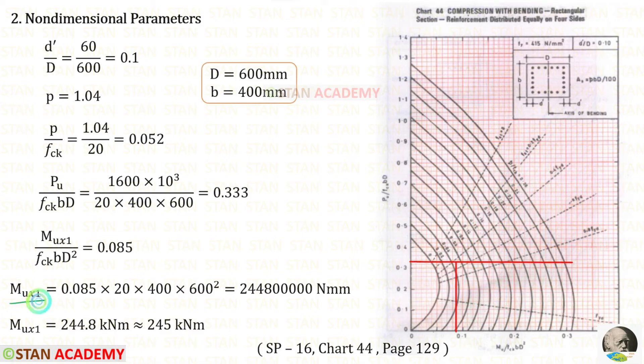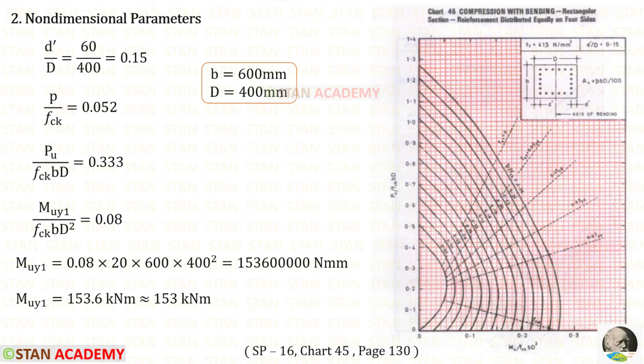For Mux1, we will get this value. This is a bigger value. We can convert that into kilonewton meter. For that, we have to divide this value by 10⁶. When we do that, we will get 244.8. We can round that to 245. Now, let us find the non-dimensional parameters in the minor axis.